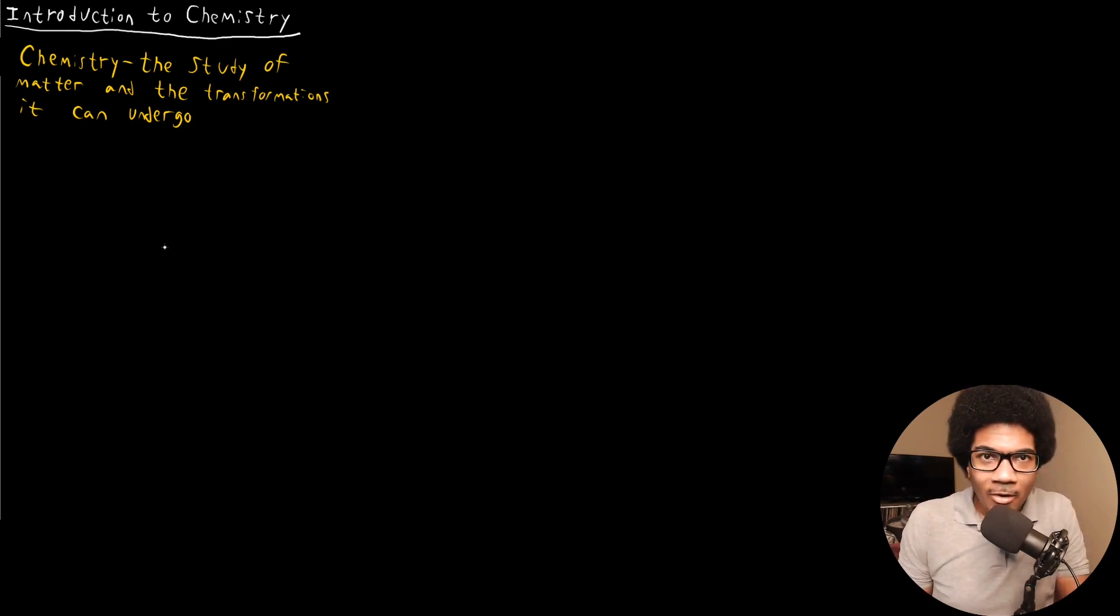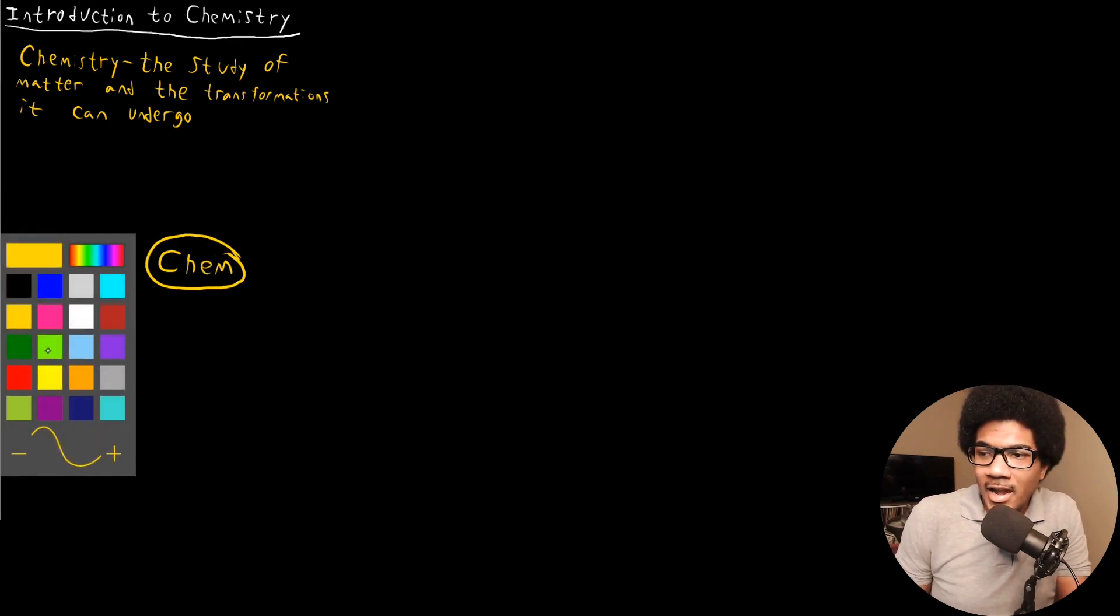Now, chemistry is often called the central science, and this is not because chemistry is better than any other field, even though I might be biased if you ask me to answer that question. But it's because chemistry really sits at the center of foundational sciences and applied sciences, and it's kind of the glue that holds them all together. So if we were to think about chemistry, I'm going to draw a little flow chart here and we're going to put chemistry at the center.